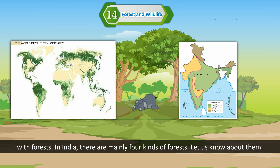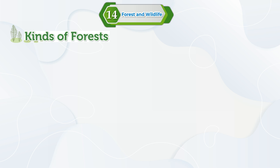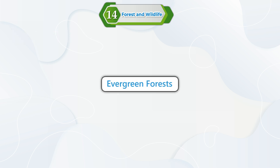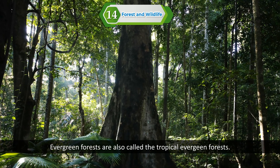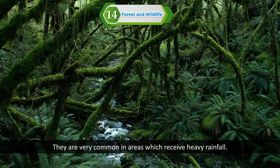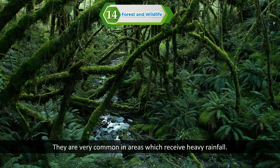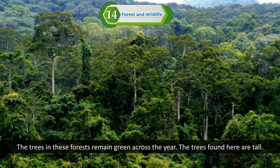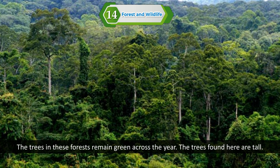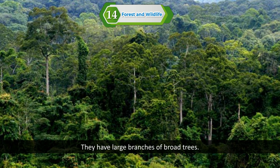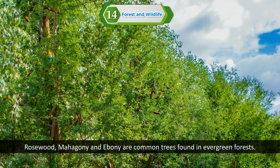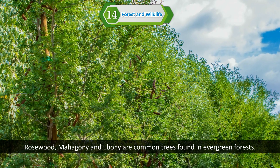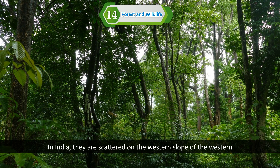In India there are mainly four kinds of forest. Evergreen forests are also called the tropical evergreen forests. They are very common in areas which receive heavy rainfall. The trees in these forests remain green across the year. The trees found here are tall and have large branches with broad leaves. Rosewood, mahogany, and ebony are common trees found in evergreen forests.